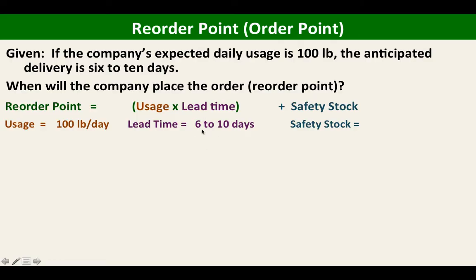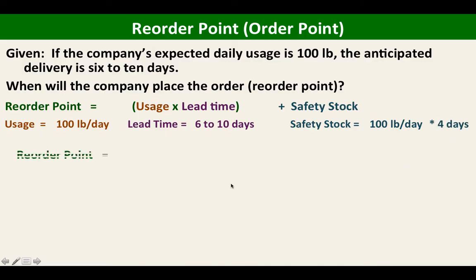Six is the minimum lead time, so we can compute that as our lead time. For the safety stock, we need to make a provision in case of delay on the delivery. The delivery can be from 6 up to 10 days, so the minimum lead time is 6 days, but it can be delayed up to 7, 8, 9, or 10 days. For our safety stock, we take the number of days from 6 up to 10 — that will be 4 days. So usage is 100 pounds per day times 4 days for our safety stock.